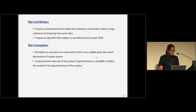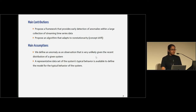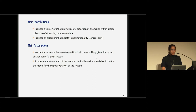The second assumption is that we assume a representative dataset of the system's typical behavior is available to build a model for the typical behavior. I would like to make a special comment on this — it doesn't mean that we need to have representative samples from all possible typical behaviors, which is unrealistic, because there can be a new typical behavior in the future. The basic idea is we need to have a warm-up dataset to identify the initial values of the parameters.